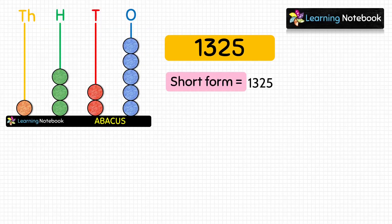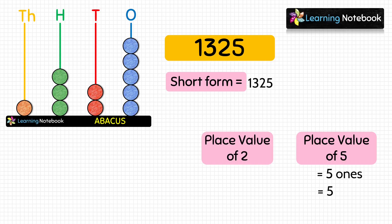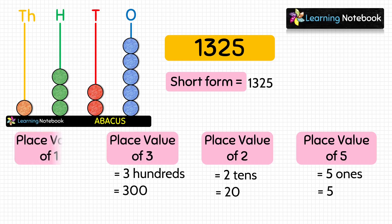1325 is also called the short form. Now let's find the place value of each digit. Place value of 5 is five ones, or 5. Place value of 2 is two tens, or twenty. Place value of 3 is three hundreds, or 300. Place value of 1 is one thousand, or 1000.